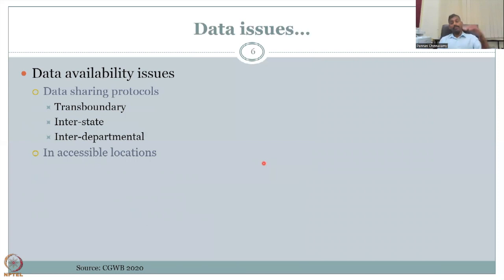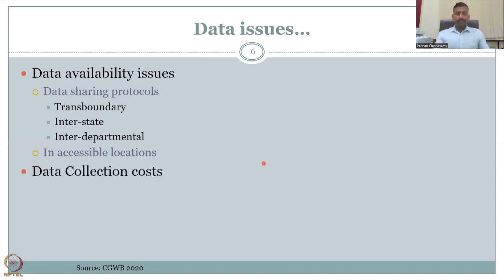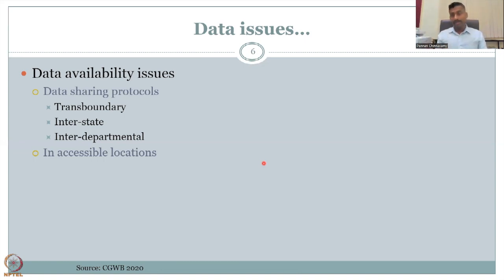There are also data procurement issues. Data availability issues mean data is not shared freely. There are transboundary issues between countries, states, and inter-departments. The government is also focusing on multiple schemes to bring all data together on one platform, enabling everyone to use it for rural development. Data availability in inaccessible locations is also a concern — for example, going to collect data from the Himalayan regions is tedious and time-consuming, and sometimes data simply isn't collected because getting it is too difficult.